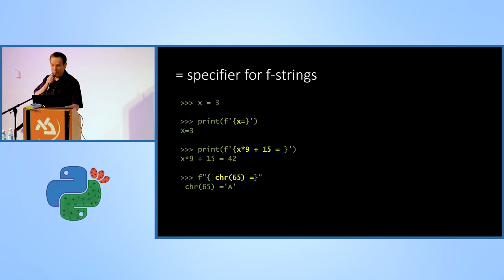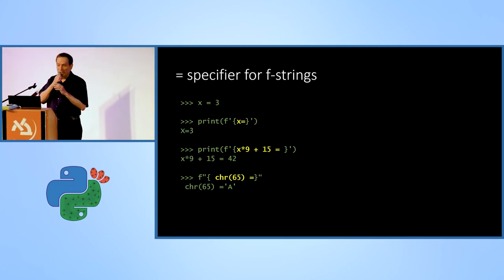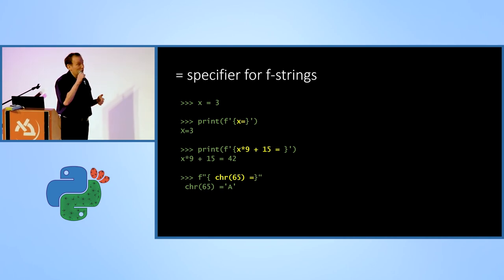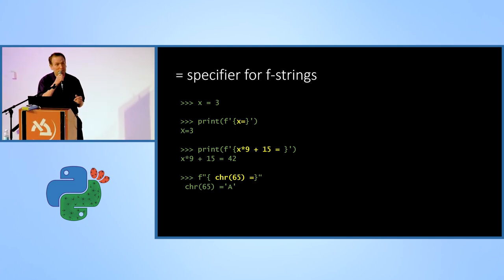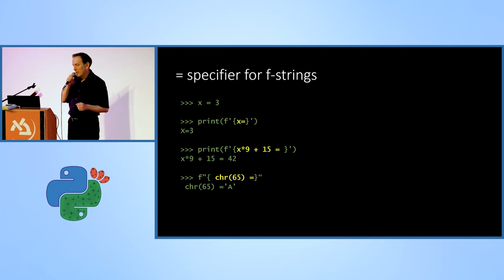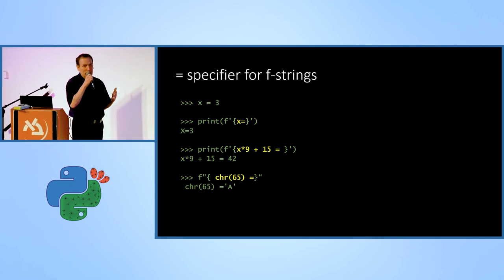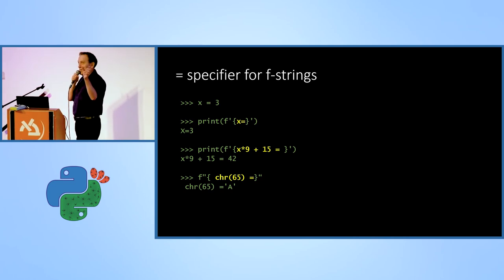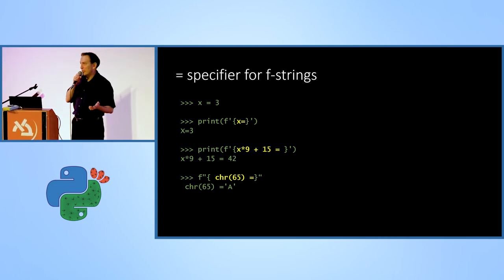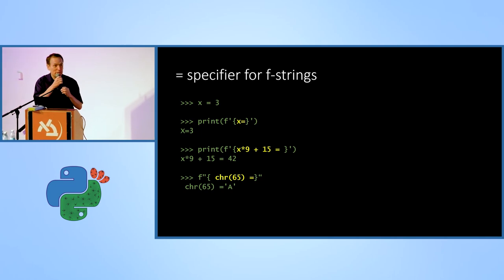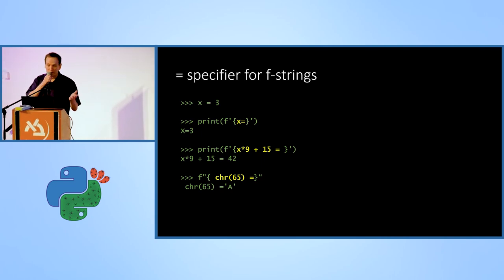The next feature is the equals specifier for f-strings. I hope everyone is familiar with f-strings, because they make our life easier and easy to understand. For debug purposes and maybe other cases, there is a very nice way to look at variables. You can have something like x equals in an f-string, and this means the f-string includes the string 'x=' and the value of x — which is stuff we do a lot when debugging with print statements. This simplifies our task by putting expressions or whatever we like with an equals at the end and getting the result.